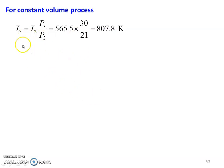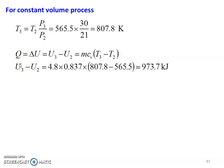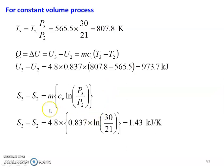For constant volume process, T3 equal to T2 into P3 by P2, which is 565.5 into 30 by 21 equal to 807.8 Kelvin. Then the heat transfer for constant volume process, delta U equal to M Cv into T3 minus T2. So 4.8 into 0.837 into 807.8 minus 565.5 equal to 973.7 kilojoules. The change in entropy for constant volume process: S3 minus S2 equal to M into Cv into logarithmic of P3 by P2, 4.8 into 0.837 into logarithmic of 30 by 21 equal to 1.43 kilojoules per Kelvin.